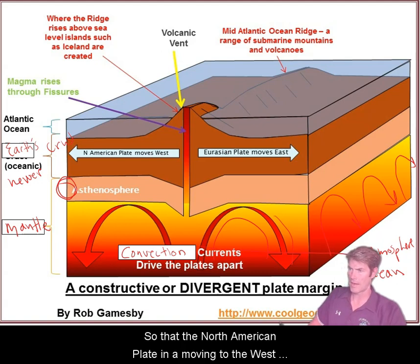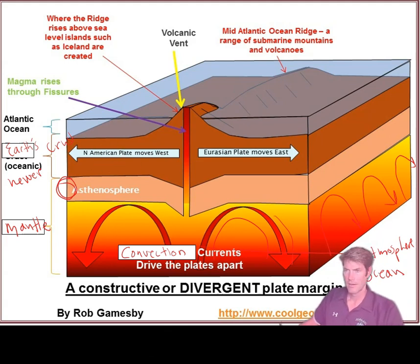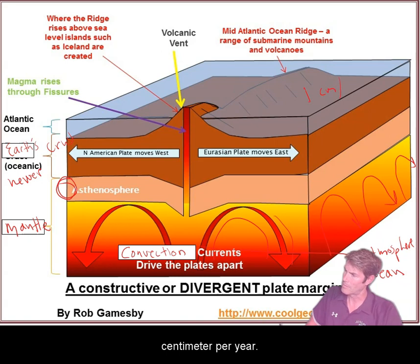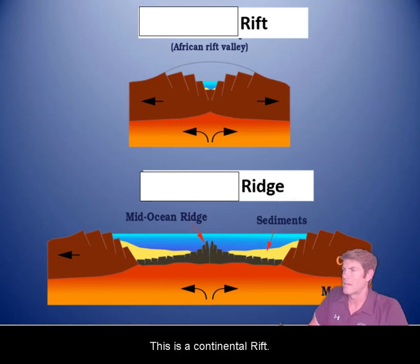The North American plate is moving to the west, the Eurasian plate moving east — about one centimeter a year. There are two examples of divergent boundaries. This is a continental rift.